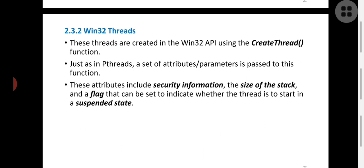The second type of thread library is Win32 threads, associated with the Windows operating system. Threads are created in the Win32 API using one function called CreateThread. We pass some parameters or attributes to this function. These attributes contain security information, the size of the stack, and also a flag. This flag tells us whether the thread has to start from a suspended state or a runnable/running state.